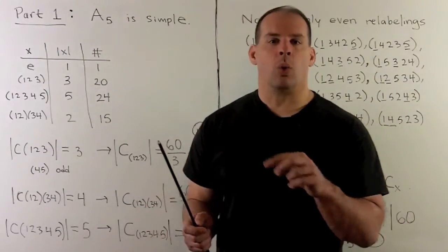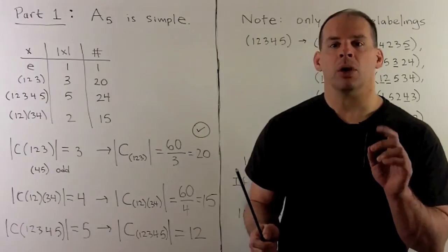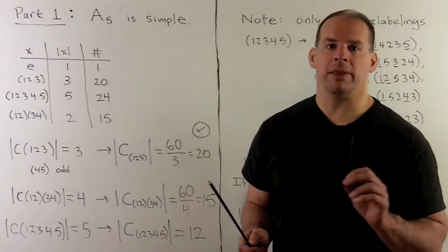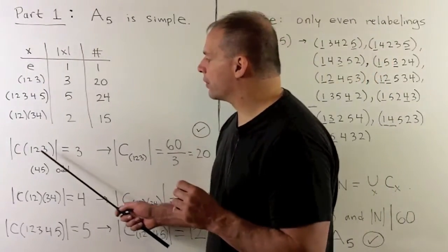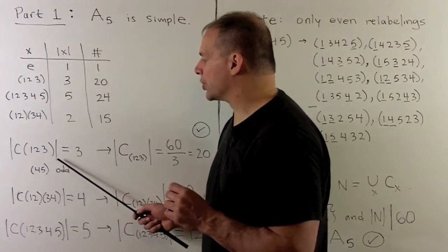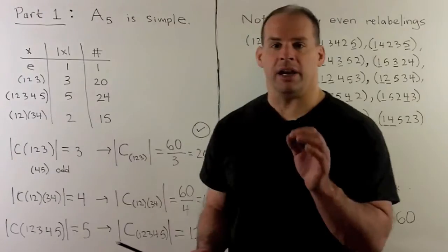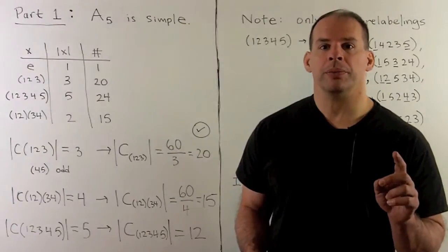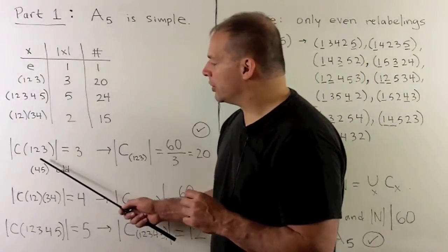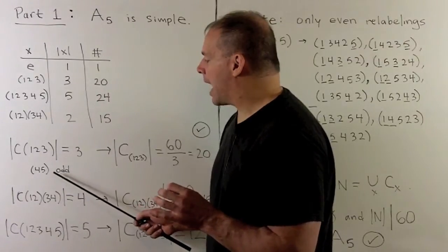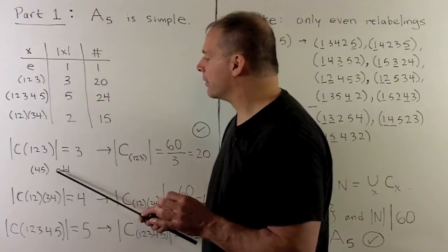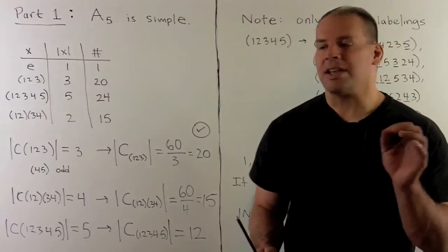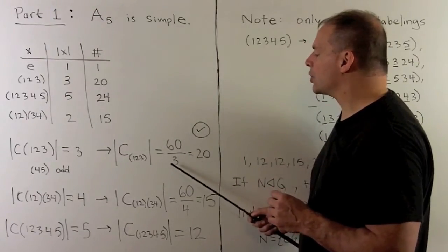To compute the orders of the conjugacy classes, we use the cardinality rule: take the order of the group divided by the order of the centralizer for some element in the class. For the three-cycle (1 2 3), what's in the centralizer? We have the identity, the element (1 2 3) itself, and its inverse (1 3 2). We could try to add a two-cycle like (4 5), but that's an odd permutation, so it's not in A5. So we get three elements, and the number of elements in the class is 60 divided by 3, which is 20. That's going to be all three-cycles.